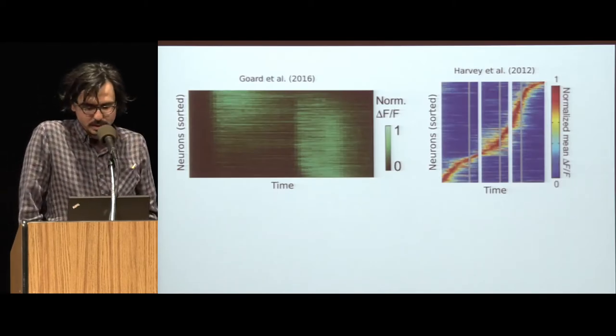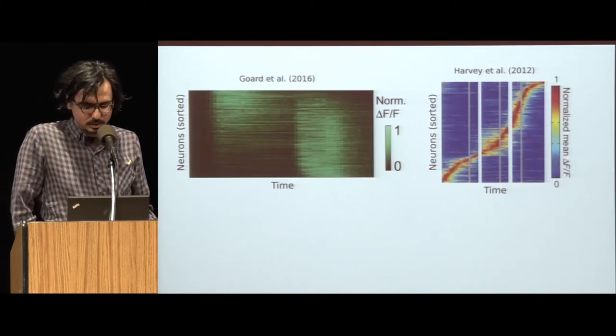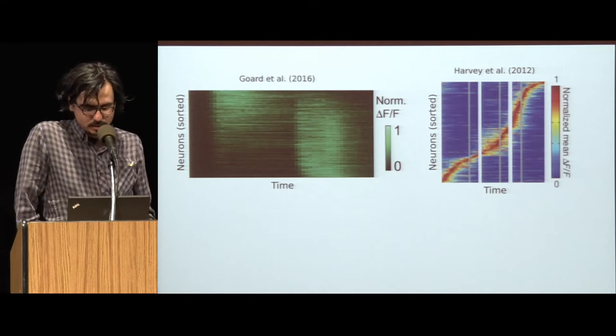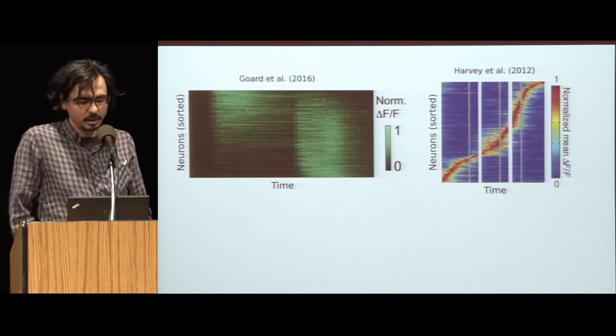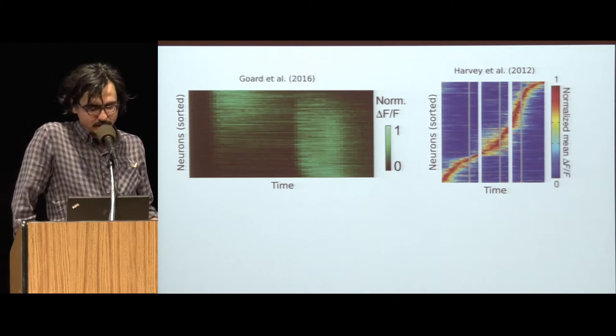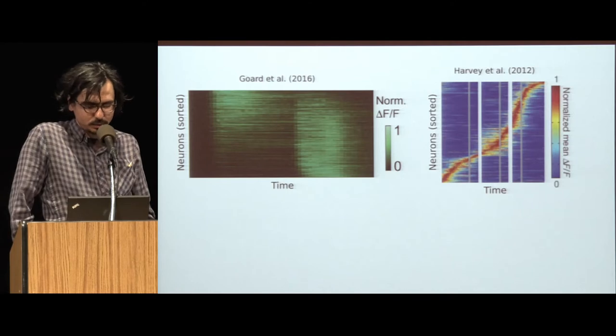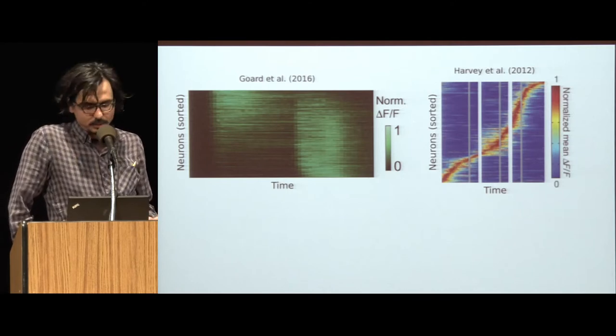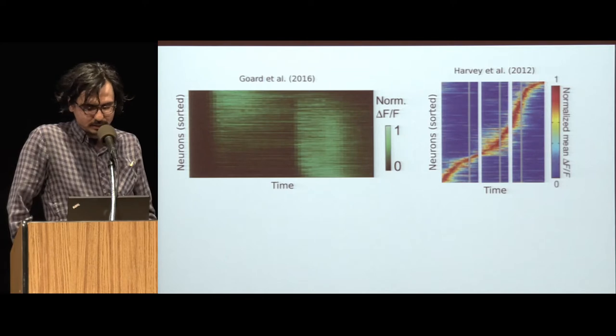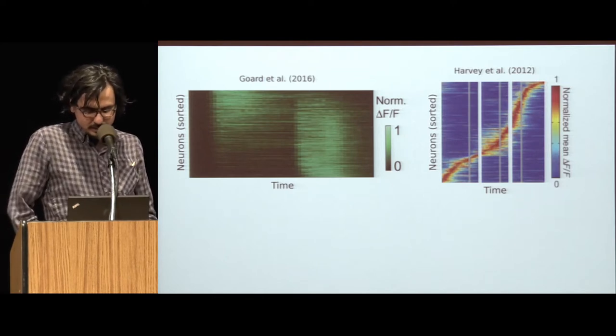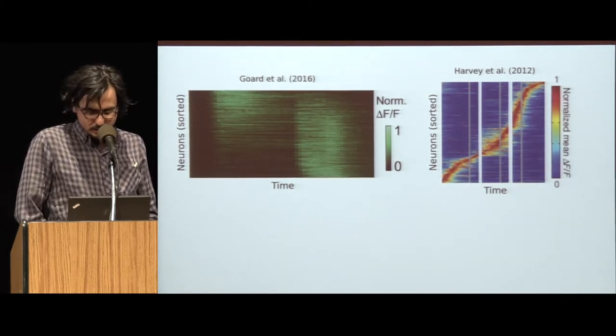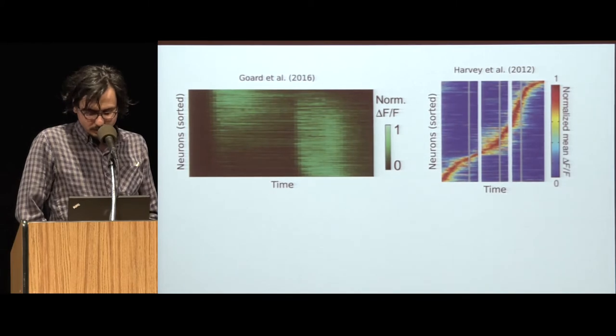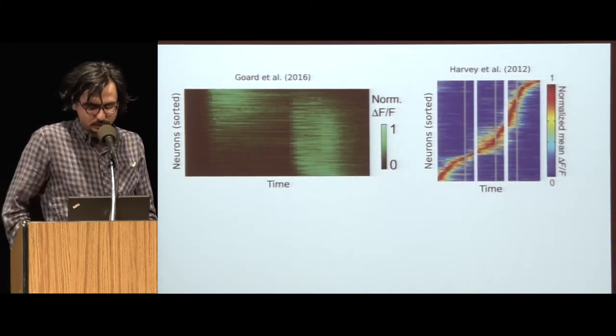So here I'll show you an example. These are results from two experiments that recorded the activity of neurons in posterior parietal cortex of mice while the animals were doing a task that required visual short-term memory. On the left, you can see that many of the recorded neurons are active during a significant fraction of the trial, whereas on the right, the activity has a clear sequential structure where each neuron is active only for a short period during the trial.